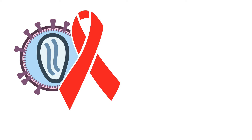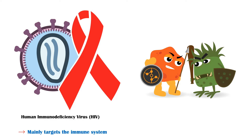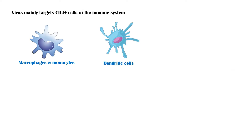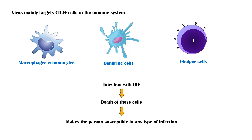HIV is a serious infection caused by the human immunodeficiency virus that mainly targets the immune system. The immune system is the army of our body, which provides defense against many infections and certain types of cancers. The virus mainly targets CD4-plus cells of the immune system, which include macrophages, monocytes, dendritic cells, and T-helper cells. Infection leads to death of these cells and progressively weakens the person's immune system, making them susceptible to any type of infection.